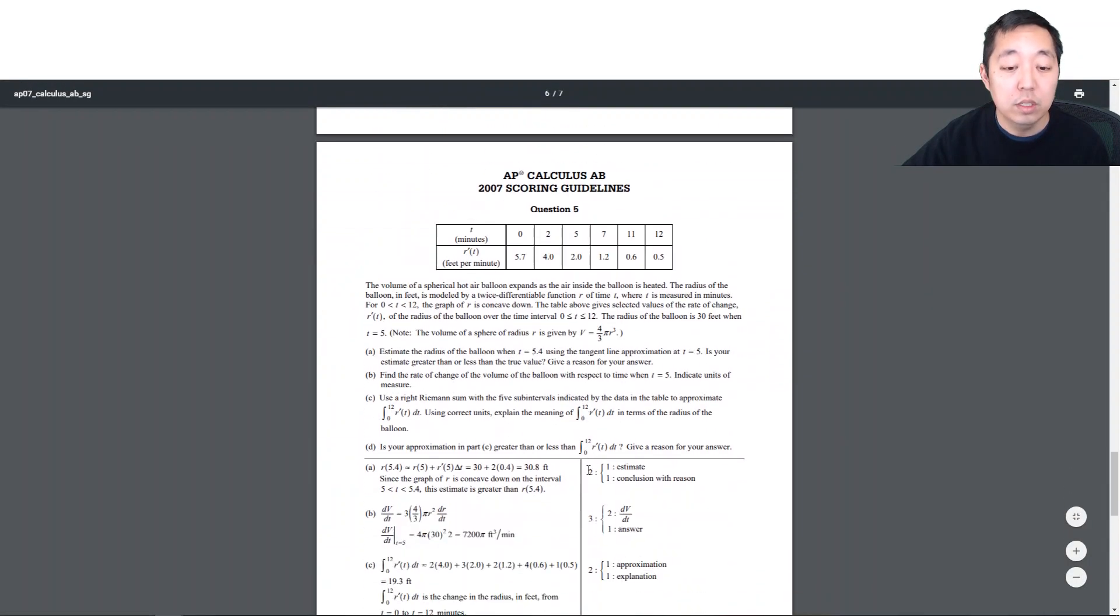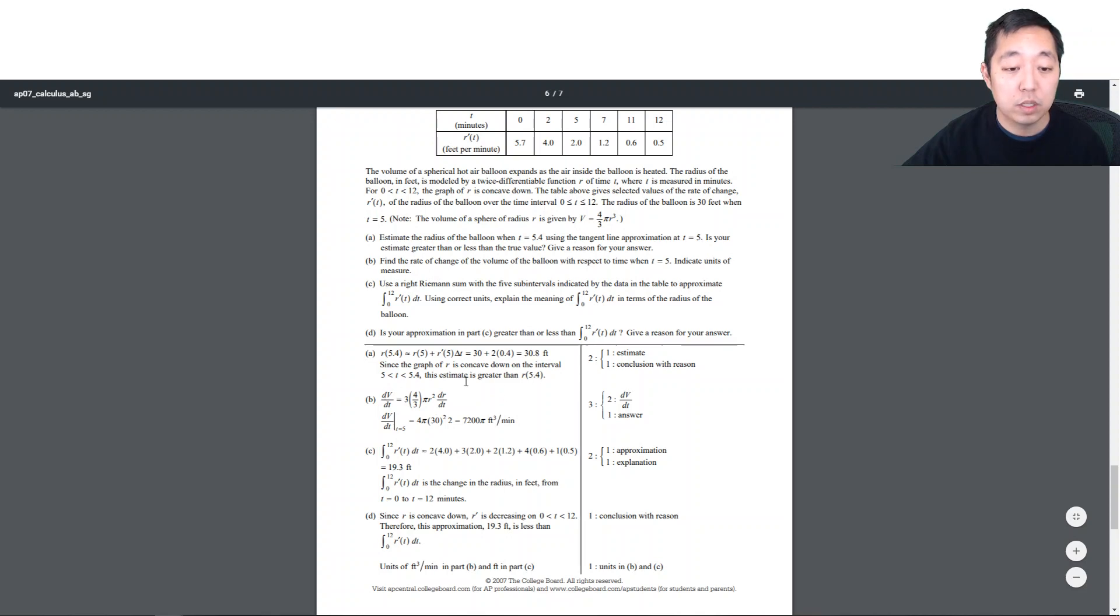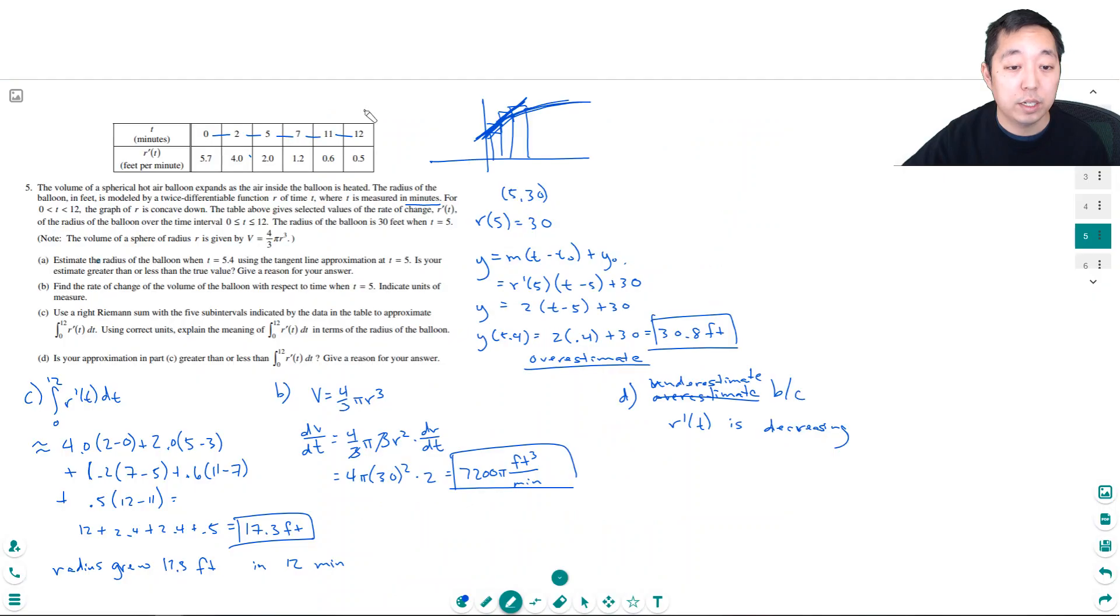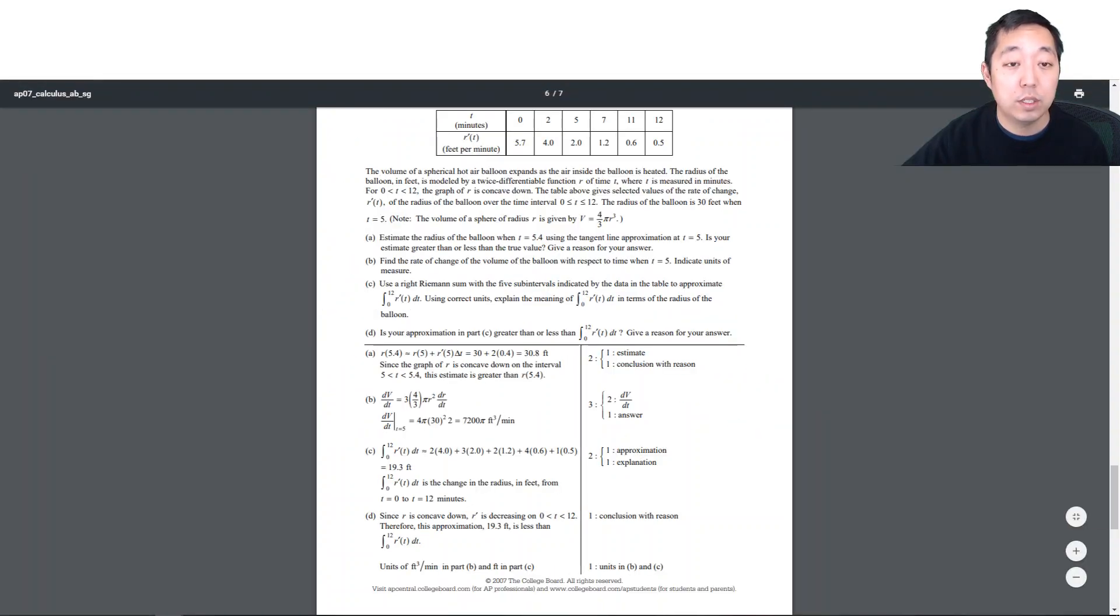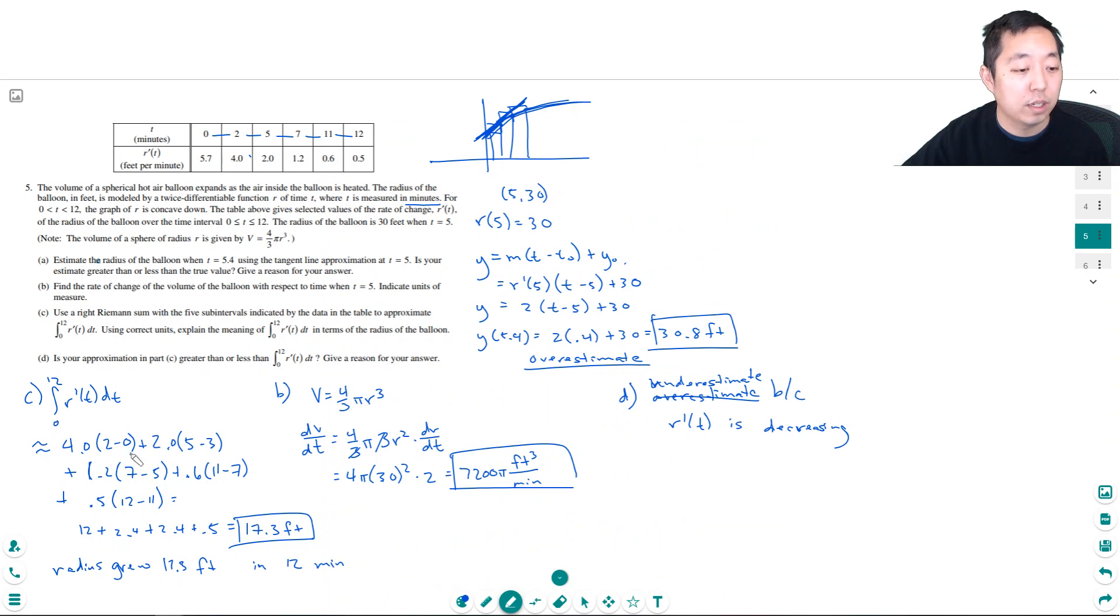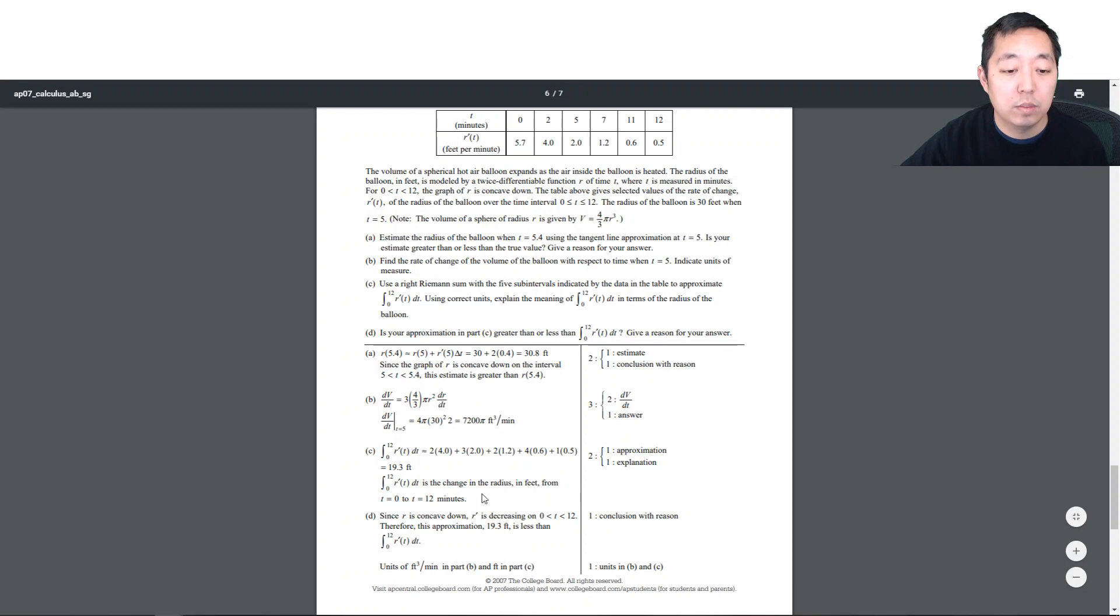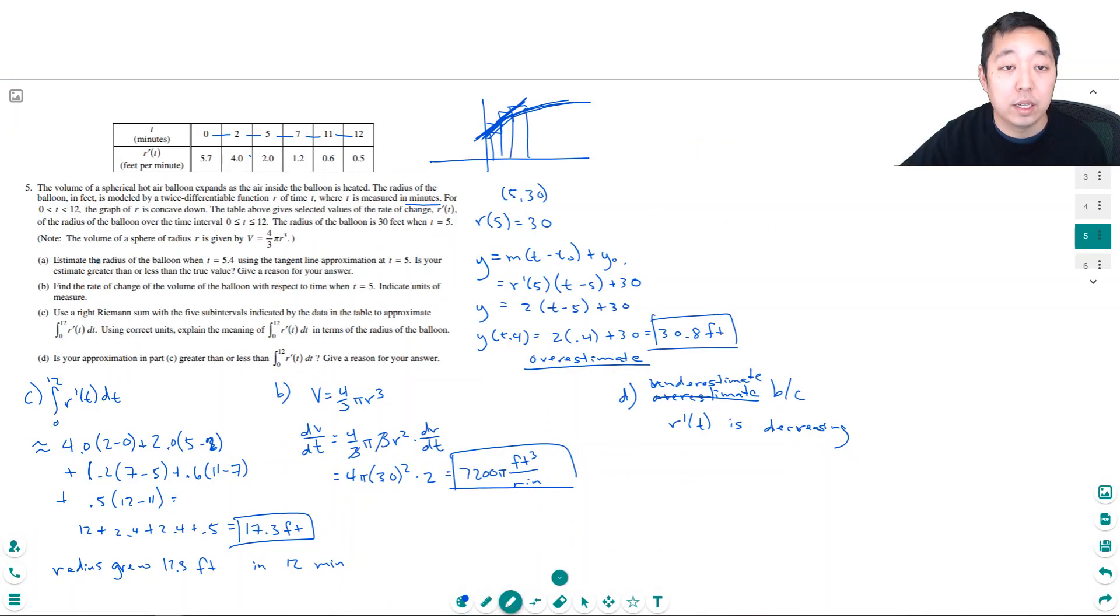Let's look at how the solutions looked. I got 30.8, and it was greater, an overestimate. 7,200 pi cubic feet per minute. Oh, 19.3. I didn't do the arithmetic correctly. 8 plus 6 is 14, not 12. This is 5 minus 2, so 3 times 2, so I was off by 2 there. 19.3 is less than the actual value, that means it is an underestimate.